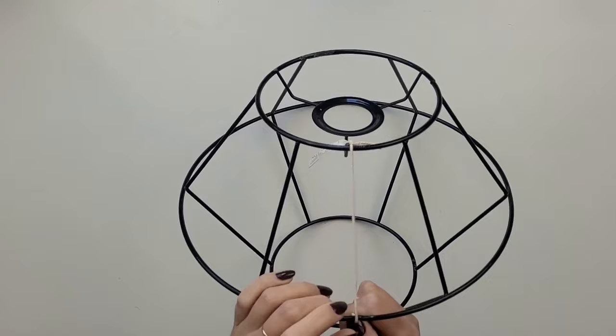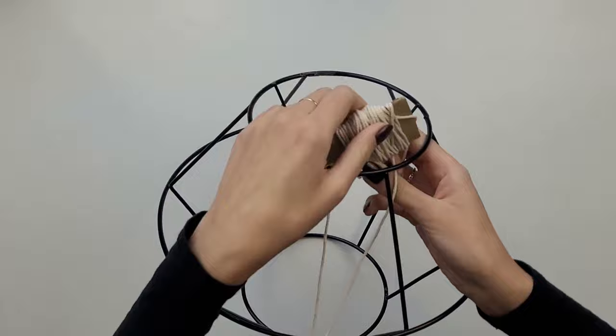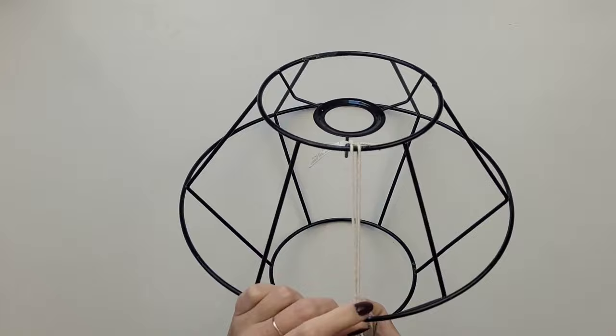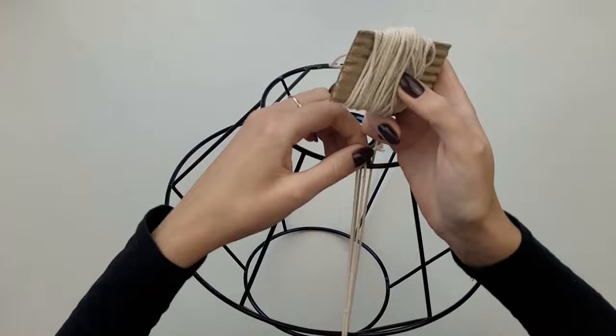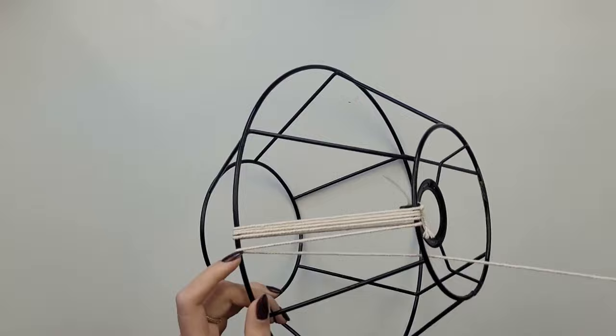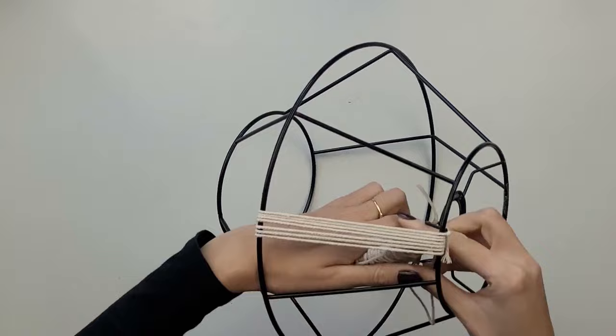I take 2mm thick macrame cord and start my design. I tie one of its ends to the metal part. Because the reel with the cord is too big to go through the gaps in my lampshade, I have to cut off a few meters of it and work like this. I start my design with the top part of the lampshade. Overall the design is very easy and repetitive. All I do is wrapping my cord around the top and middle wire. I pull the cord each time, making sure it's nice and tight.